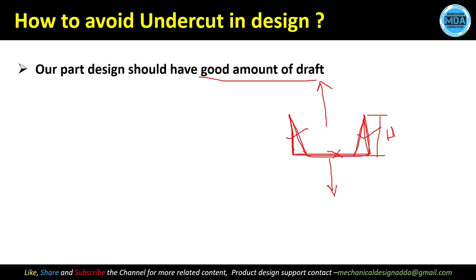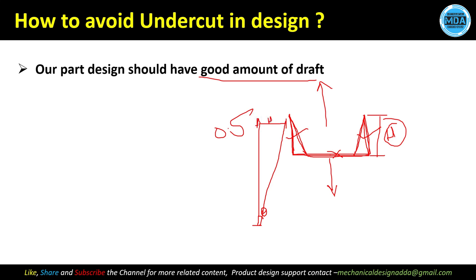In injection molding, we generally try 1 to 3 degrees of draft, but it depends on the surface height. You can go as low as 0.5 degrees if the height is large. Always make sure that the draft does not disturb the base geometry. If the surface height is very small, you can go for 5 degrees.